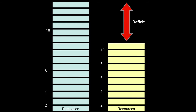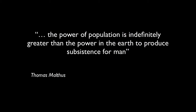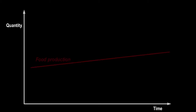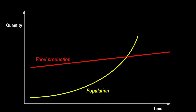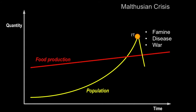Malthus concluded that the power of population is indefinitely greater than the power of the earth to produce subsistence for man. In short, Malthus's theory predicts that when food production increases over time to meet demand, the population will grow faster and exceed the food or resource producing capacity, and growth is checked in the end by famine, disease, and war — something called a Malthusian crisis.